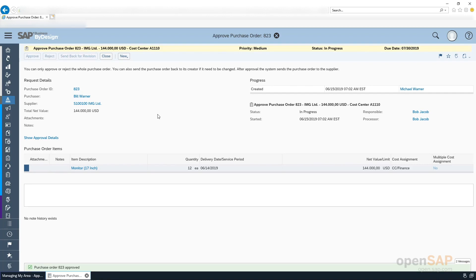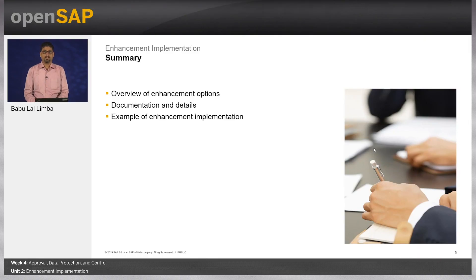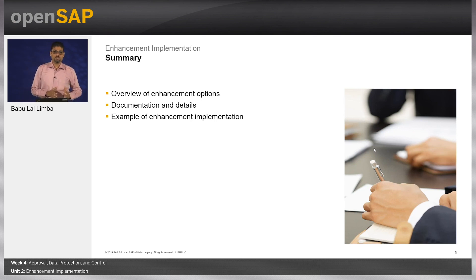That was the use case we wanted to implement, and we have seen how the enhancement implementation works. With this example it should be clear what enhancement implementation means and how we can plug in custom logic into a general scenario. In summary, we have learned what enhancement option means and how it helps partners. With this example implementation you should be able to create custom approval rules for standard business objects. Please try the exercise for this unit for hands-on experience. Thank you and see you in the next unit.